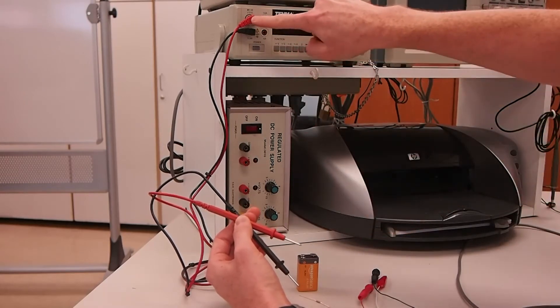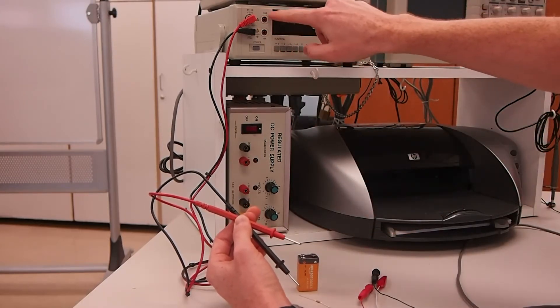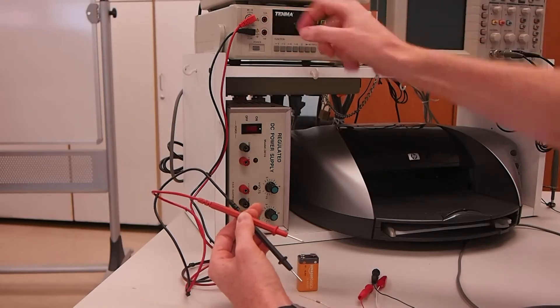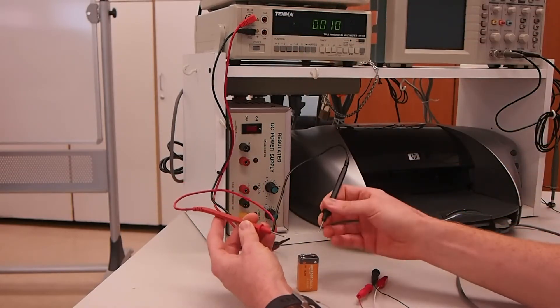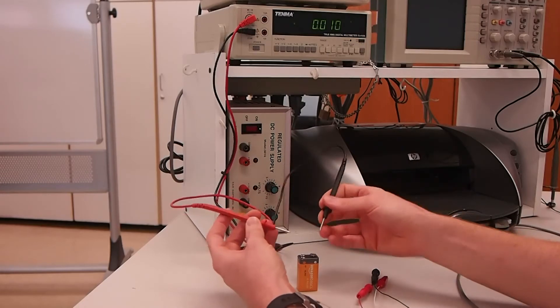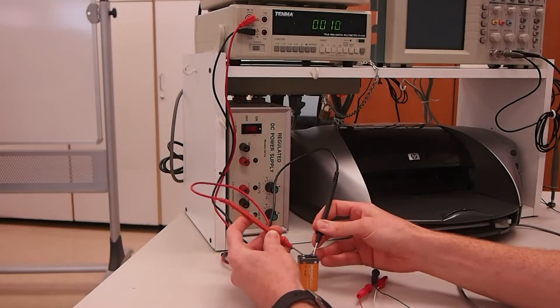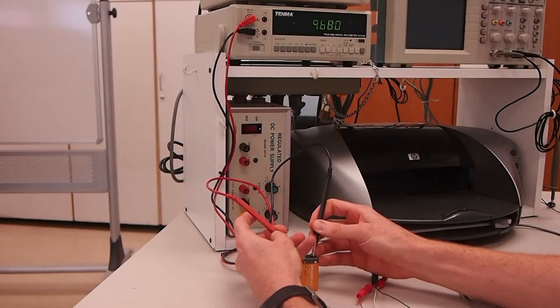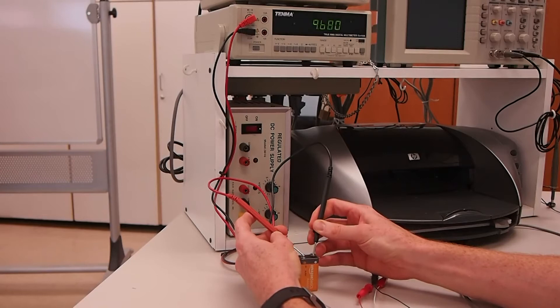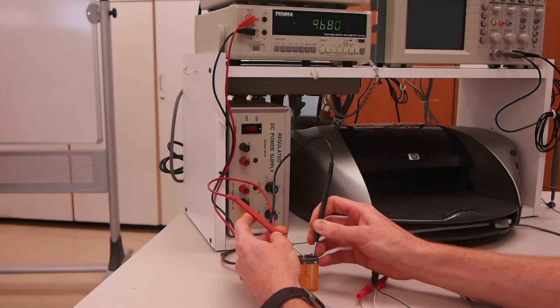You'll always use this point unless you're measuring large amounts of current. The black lead goes on the negative side, the ground side, and the red lead on the positive side. Measuring our battery, we get 9.68, 9.7 volts, so somewhere around 9.7 volts.